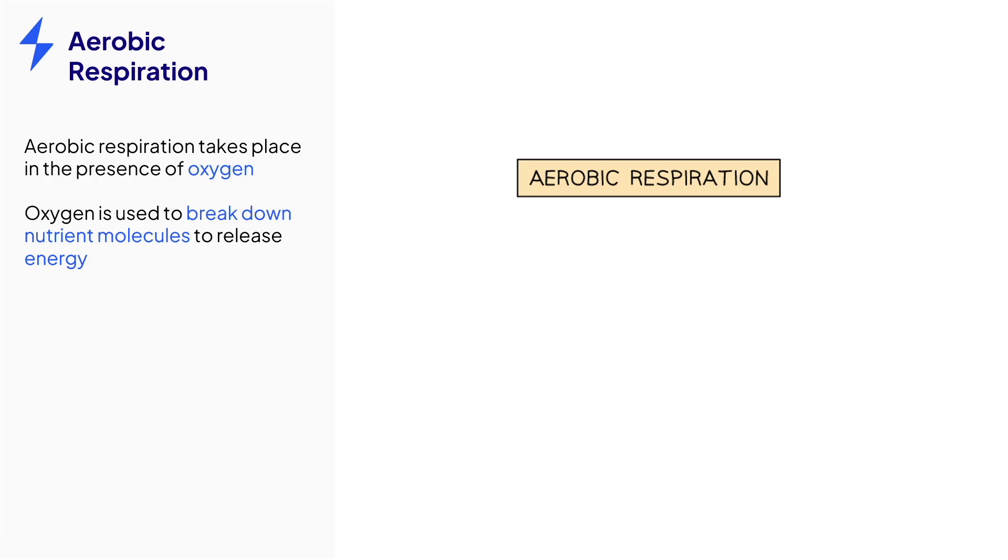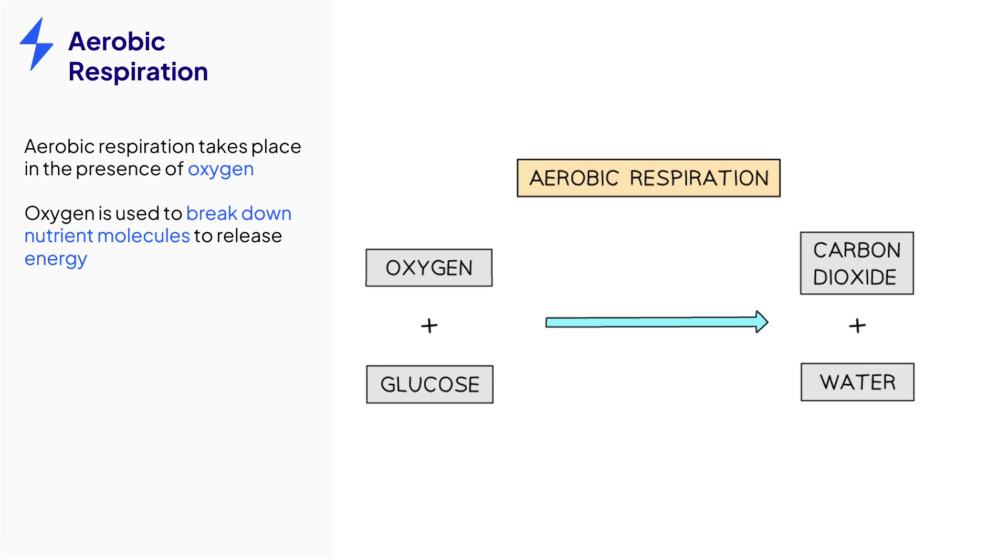Aerobic respiration can be represented by the following word equation: oxygen plus glucose leads to the production of carbon dioxide and water. You can state these reactants and products in any order. Lots of energy is released in the process, but this is not part of the equation as it is not made of any atoms.